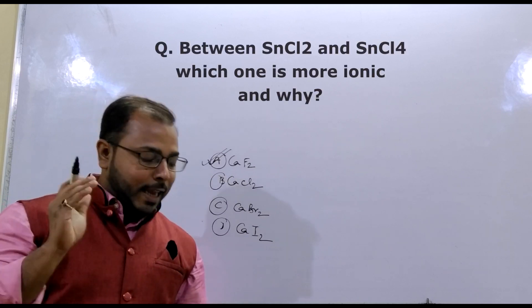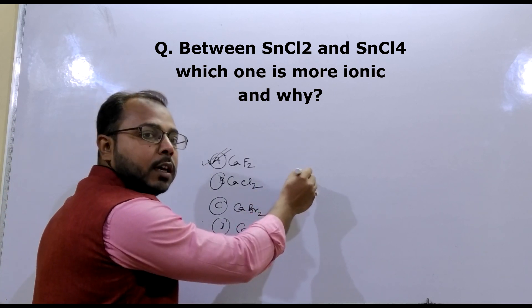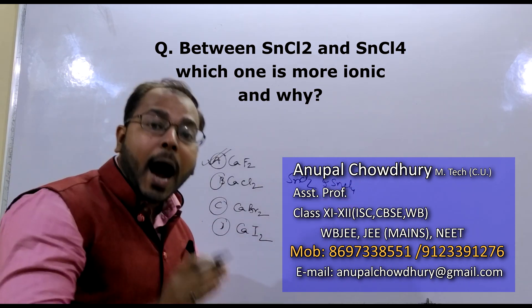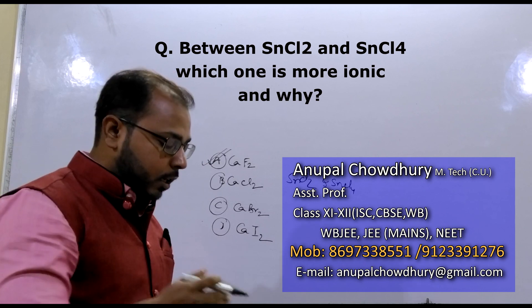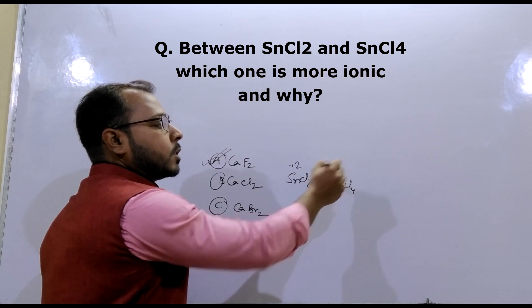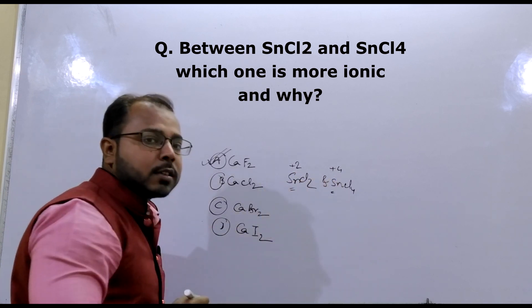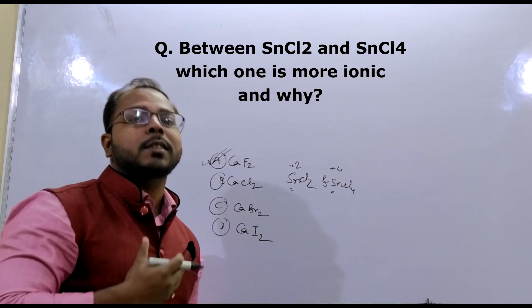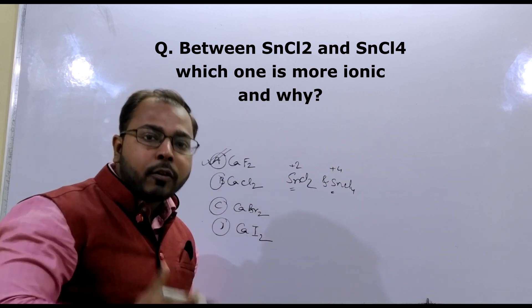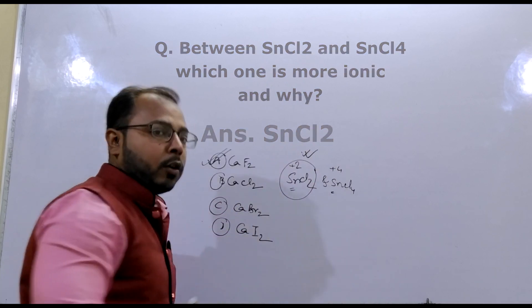The next question: between SnCl2 and SnCl4, which one is more ionic and why? Here, SnCl2 has Sn in the +2 state and SnCl4 has Sn in the +4 state. As cationic charge increases, the cation becomes more electron deficient, giving it more ionic potential (phi), and therefore more covalent nature. So between these two, SnCl2 is more ionic.